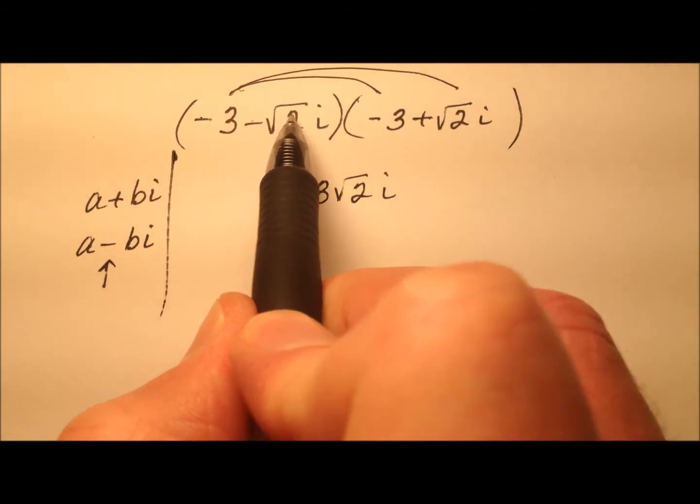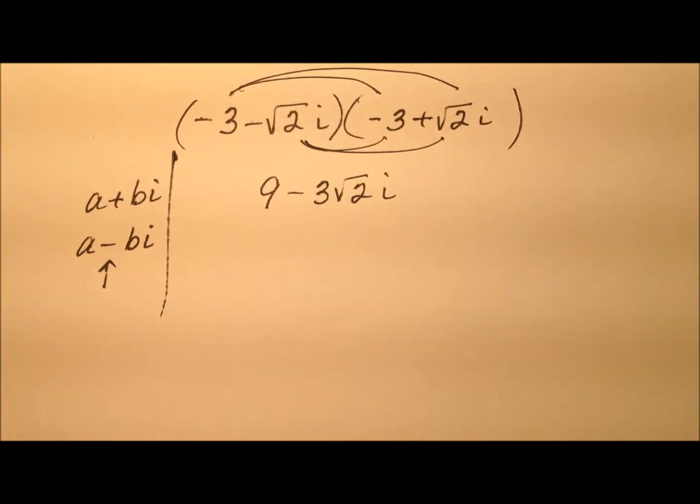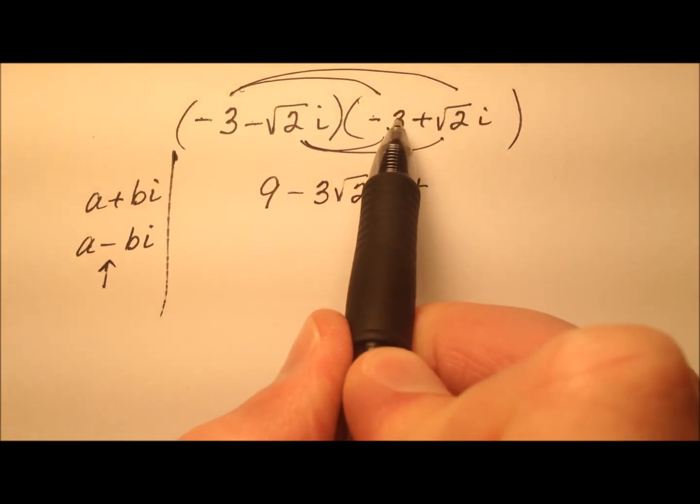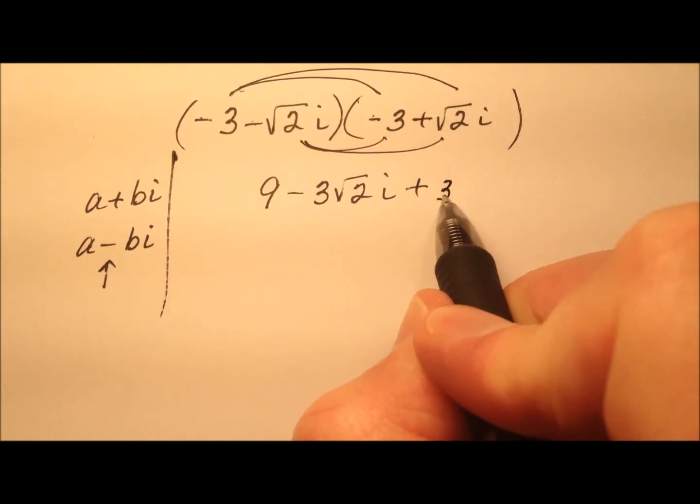Let's take the negative square root of 2i and distribute it. Negative and a negative is a positive, so we get 3 radical 2i.